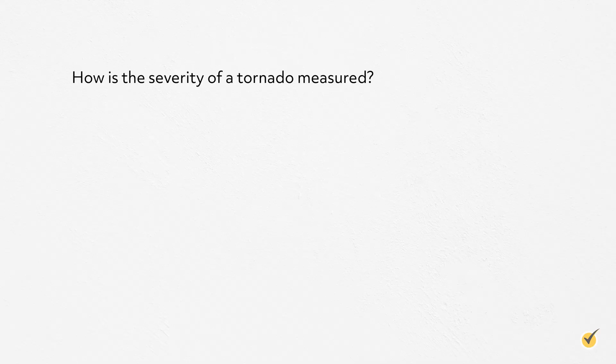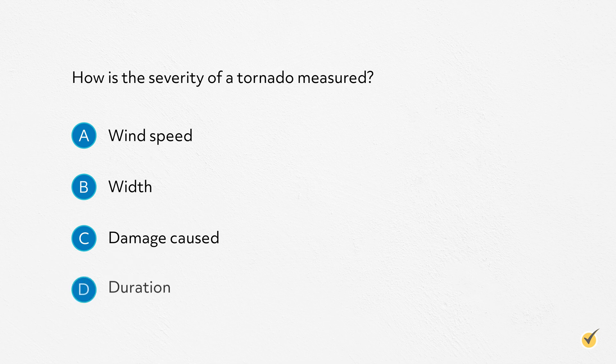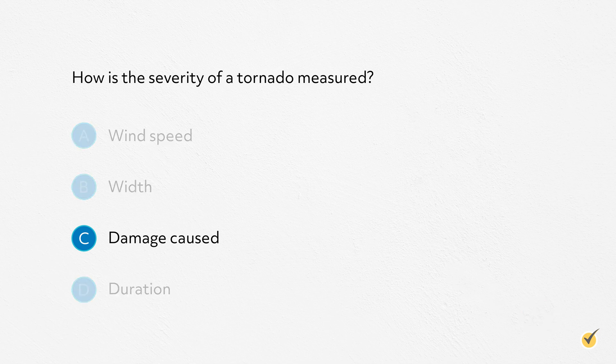Now let's go over a few review questions. Number one: how is the severity of a tornado measured? A) wind speed, B) width, C) damage caused, or D) duration? The correct answer is C, damage caused. While wind speed guidelines are assigned to each EF scale rating, tornadoes are not solely rated by this metric. Tornado evaluators actually go out to survey the damage and assign a damage indicator — basically a number assigned to the toughest thing the tornado destroyed.